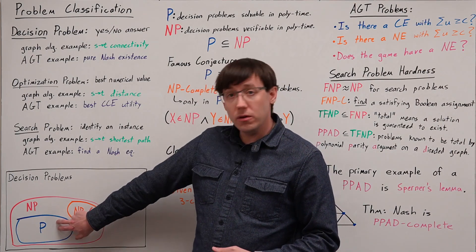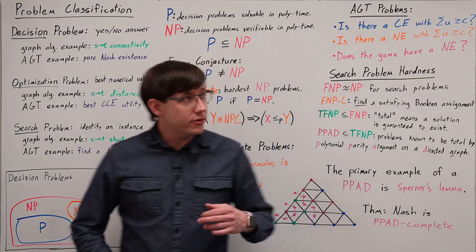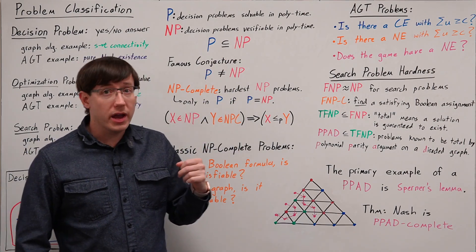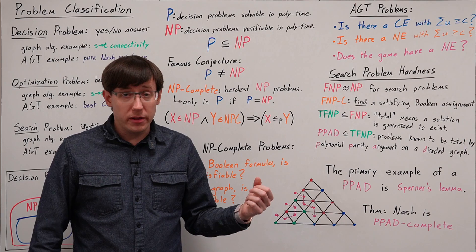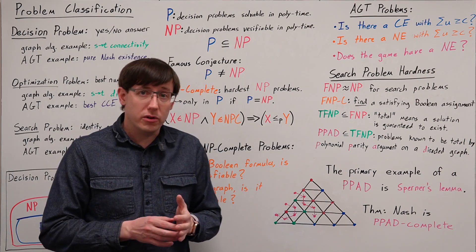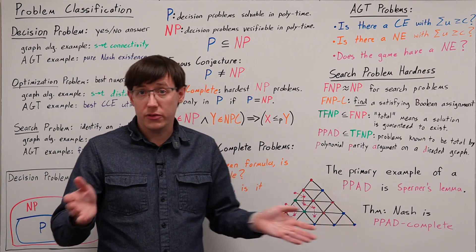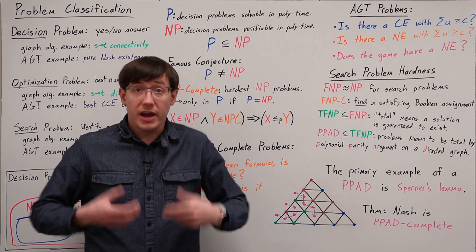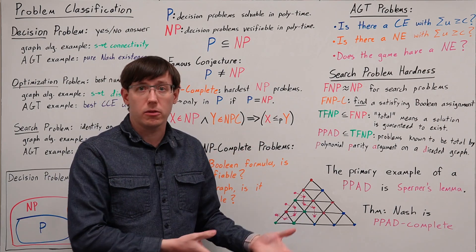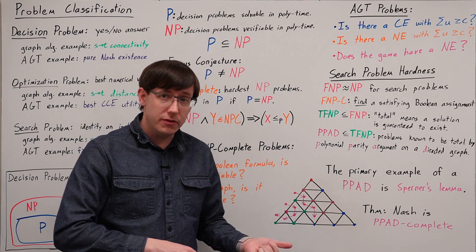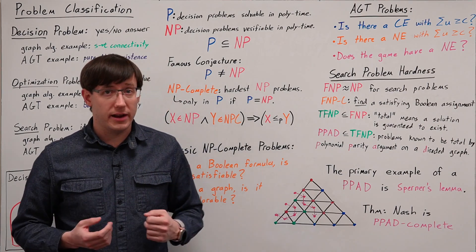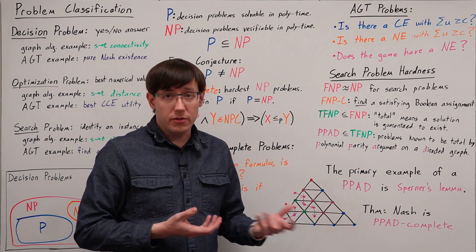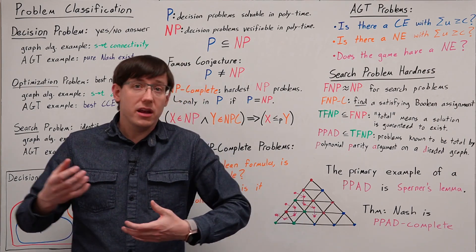As I've drawn here, the class P is definitely a subset of the class NP, because if you can solve a problem in polynomial time — that is, there's an efficient algorithm that tells you whether the answer is yes or no — then there's obviously a proof that the answer is yes or no. That proof can be to just run the algorithm. So any problem that can be solved efficiently can also be verified efficiently, but there are plenty of problems that we don't know how to solve efficiently but we can efficiently verify.